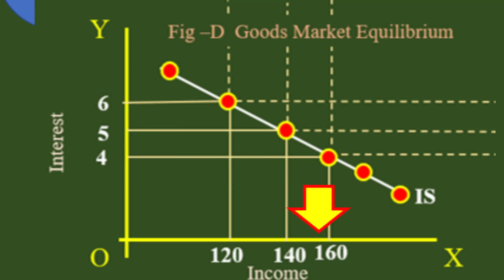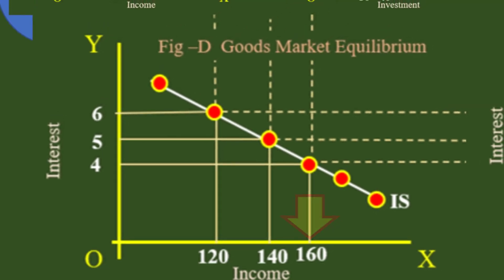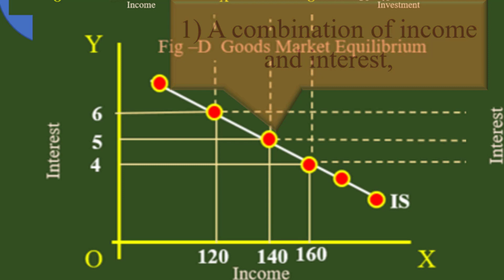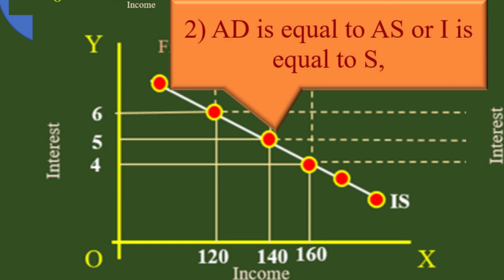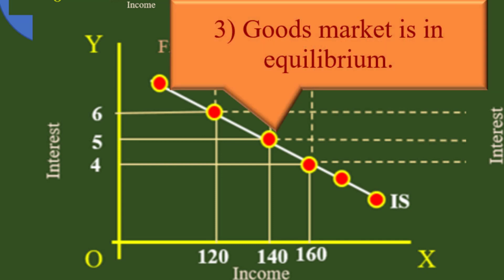Each point on the IS curve represents three things: 1. A combination of income and interest. 2. Aggregate demand is equal to aggregate supply. 3. Investment is equal to savings, meaning the goods market is in equilibrium.